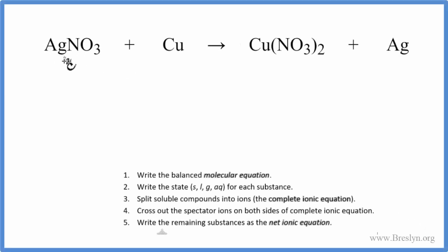In this video, we'll write the balanced net ionic equation for AgNO3 plus Cu, that's silver nitrate plus copper. So the first thing that we need to do is write the balanced molecular equation, and that means we're just going to balance it as we traditionally balance equations.